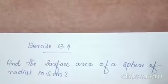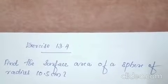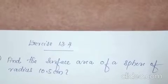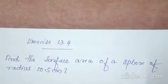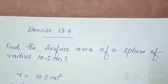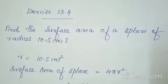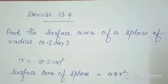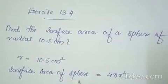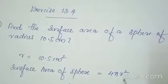Hi children, today we are going to do exercise 13.4. The first question is: find the surface area of a sphere of radius 10.5 cm. Here we have to find the surface area of a sphere. They have given the radius: R equals 10.5 cm. We have to find the surface area of the sphere. What is the formula? 4 pi r square.